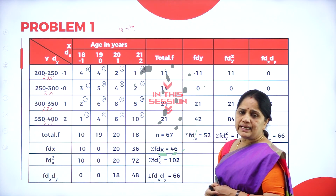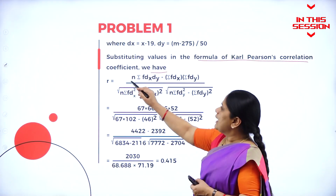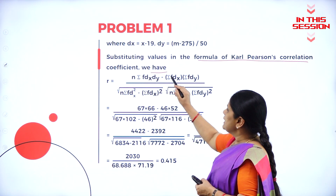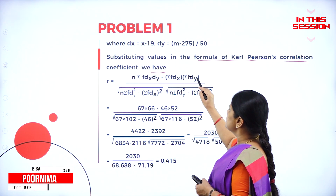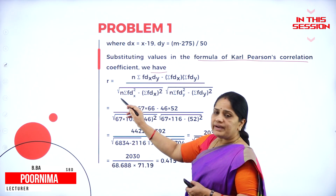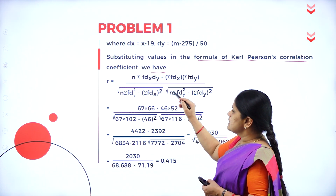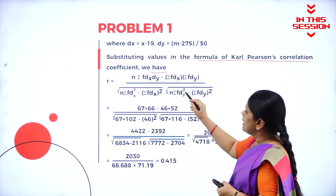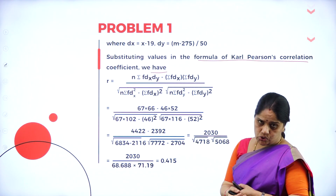Once you have the midpoint, you have to calculate the deviations from y. r equals n sigma f dx dy minus sigma f dx into sigma f dy, divided by root of n sigma f d-square x minus sigma f dx the whole square, into root of n sigma f d-square y minus sigma f dy the whole square.